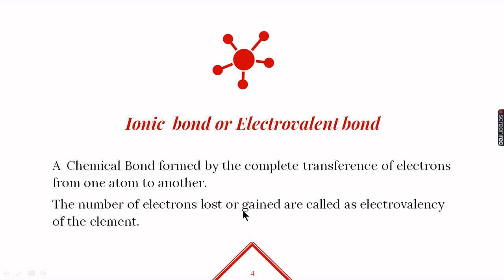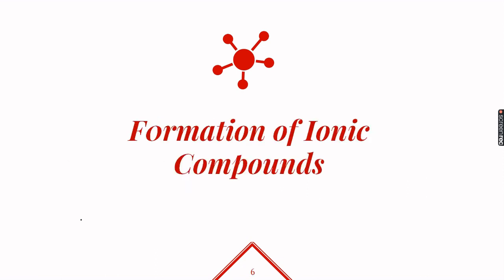The number of electrons lost or gained are called the electrovalency of the element. For example, if sodium loses one electron to become stable, its electrovalency is one. If nitrogen gains three electrons to become stable, its electrovalency is three. Basically, electrovalency is the same as the valency of an element.